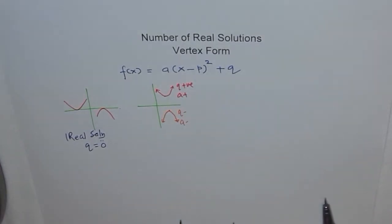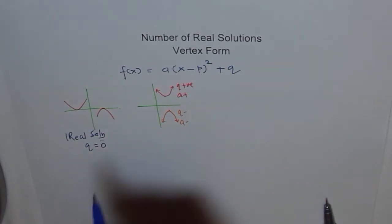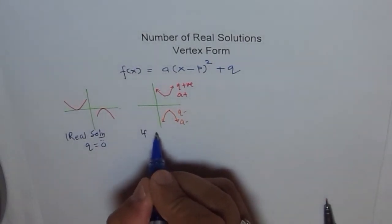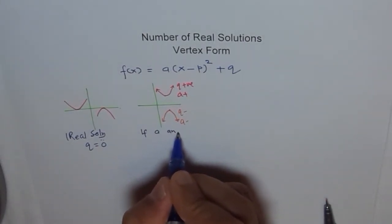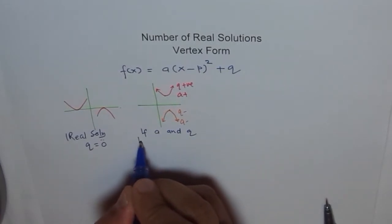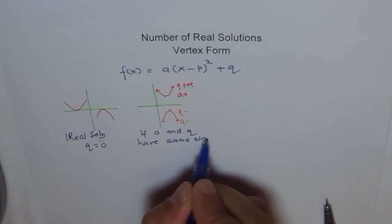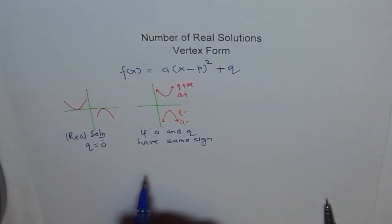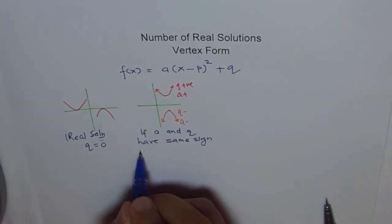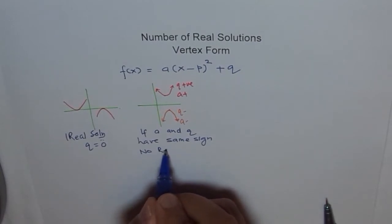So what we say is if a and q have same sign, then what happens? Then we have no real solution.